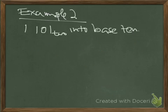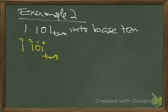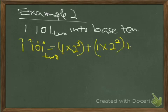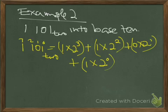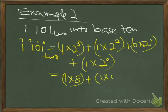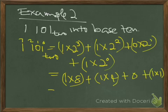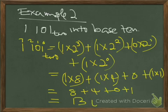Next example: convert 1101 base 2 to base 10. Positions are 0, 1, 2, 3. Therefore it equals 1 times 2 to the power 3, plus 1 times 2 to the power 2, plus 0 times 2 to the power 1, plus 1 times 2 to the power 0. That is 1 times 8 plus 1 times 4 plus 0 plus 1 times 1, which equals 8 plus 4 plus 0 plus 1. The answer is 13 in base 10.